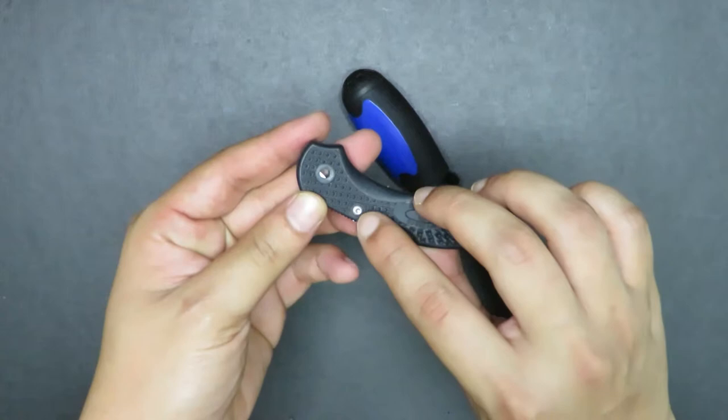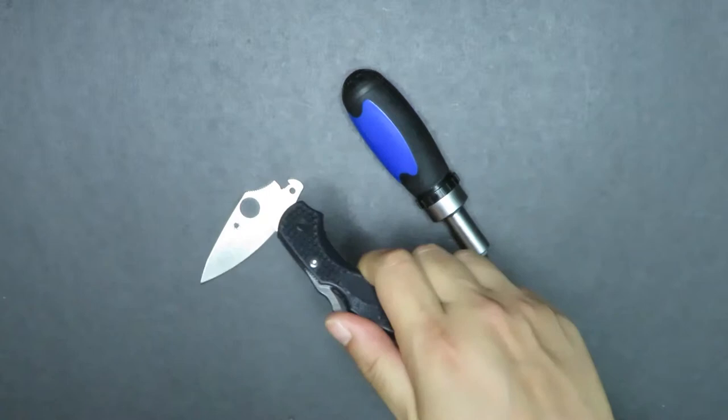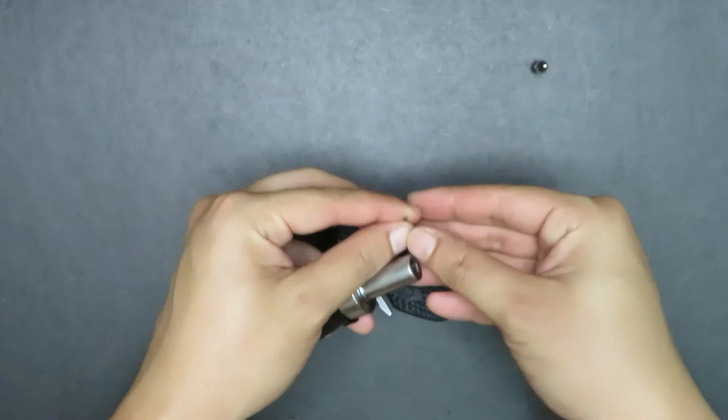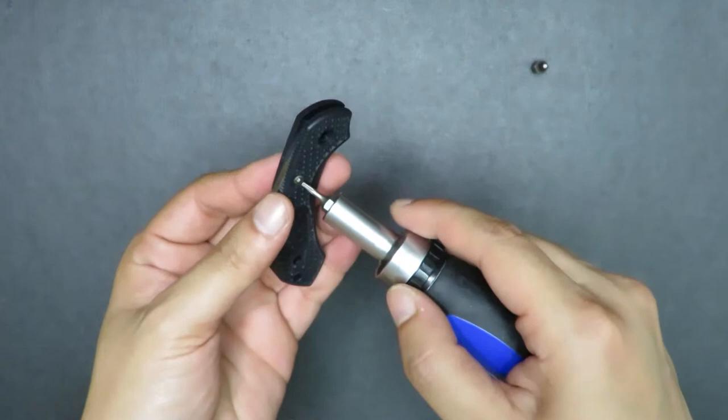All right. Now I'm just going to pull out the blade because there's nothing else holding onto it. And you have one final screw here. Now this screw is the lock bar screw right here. So it holds the lock bar in place. And that is using a T6 bit here.